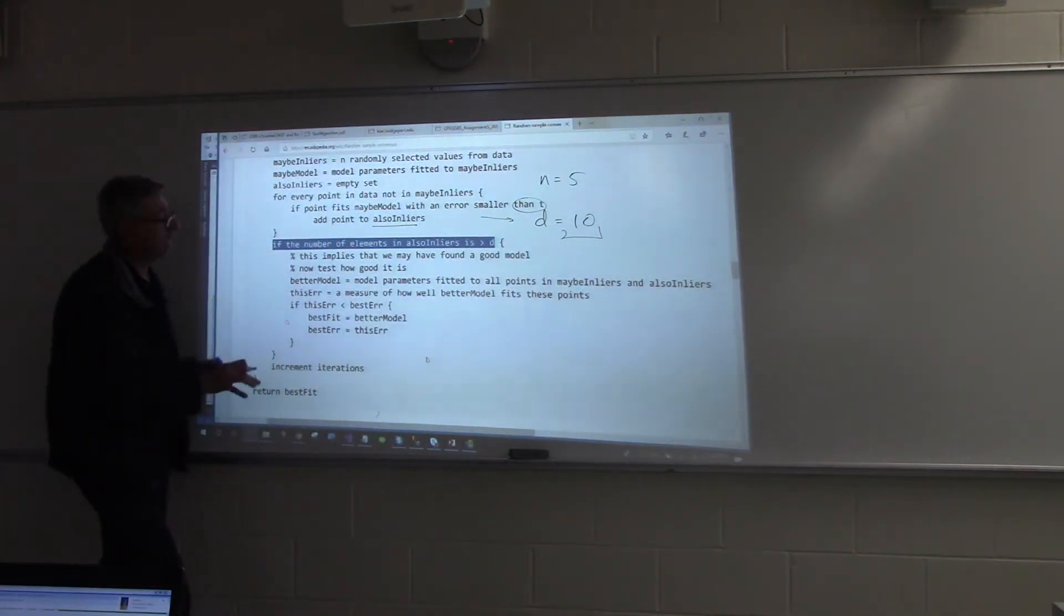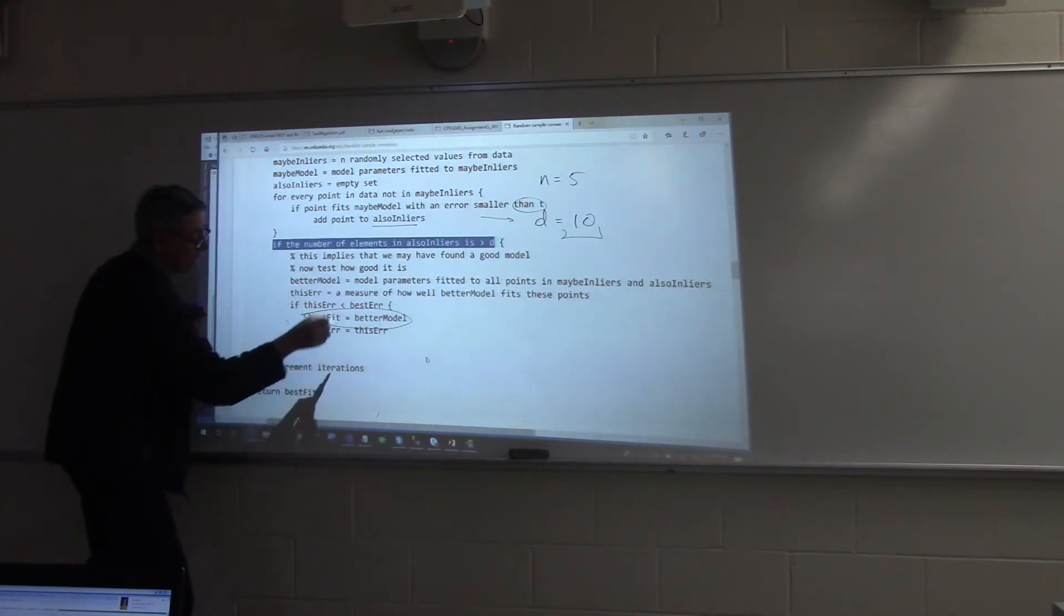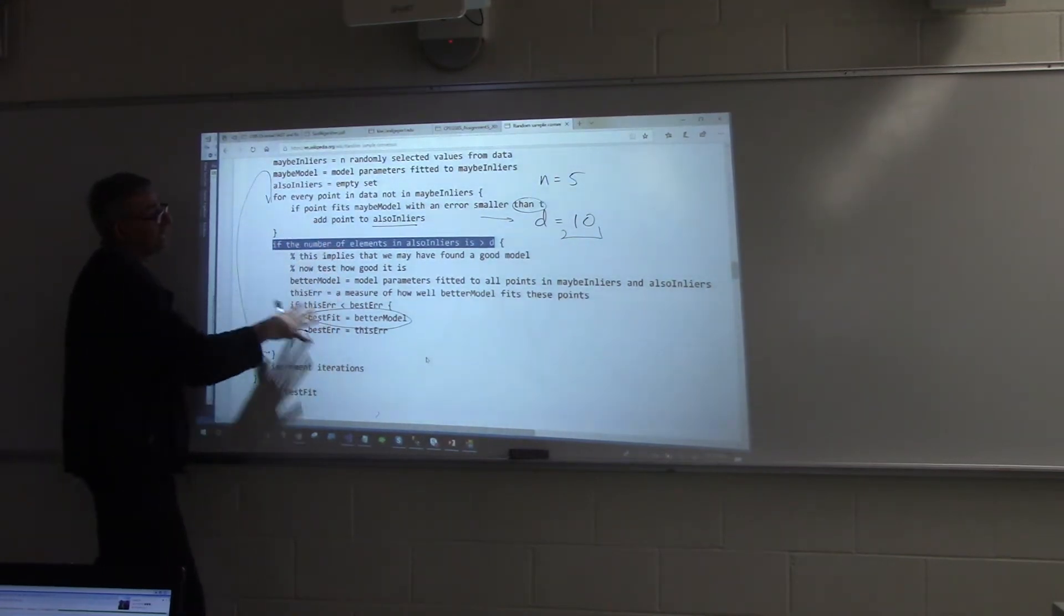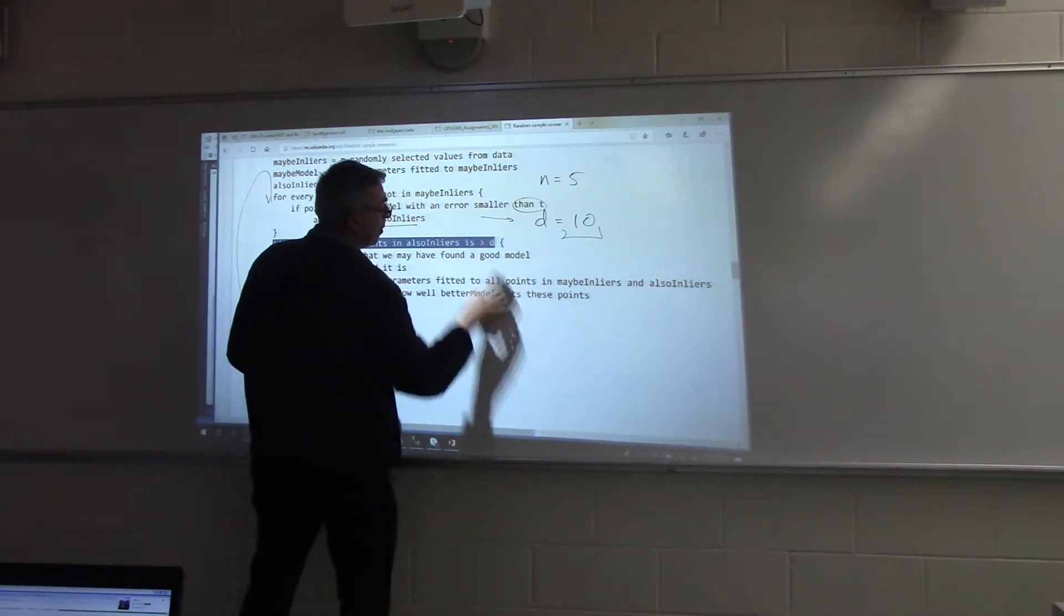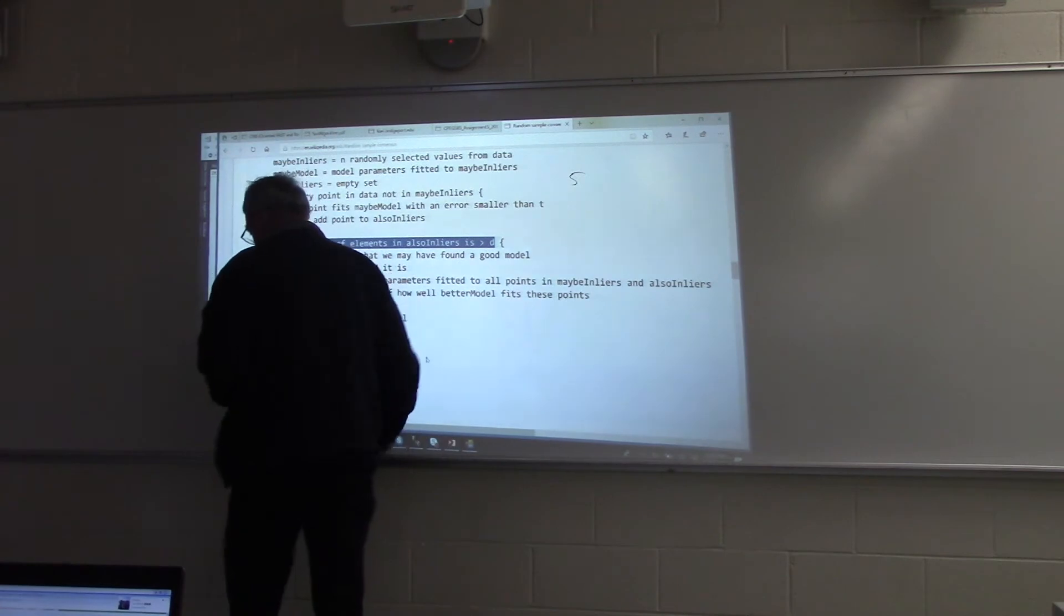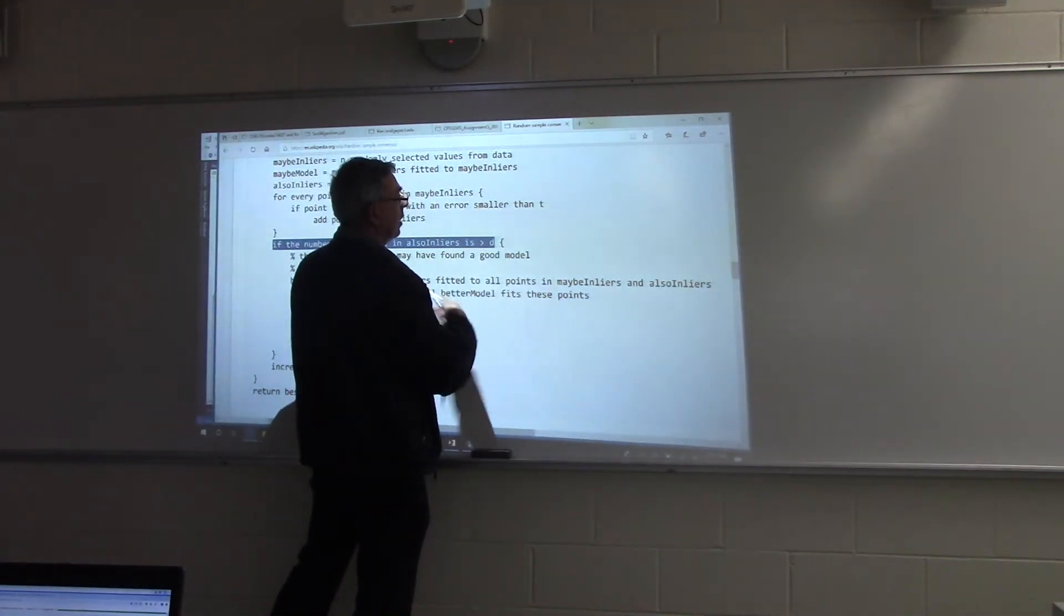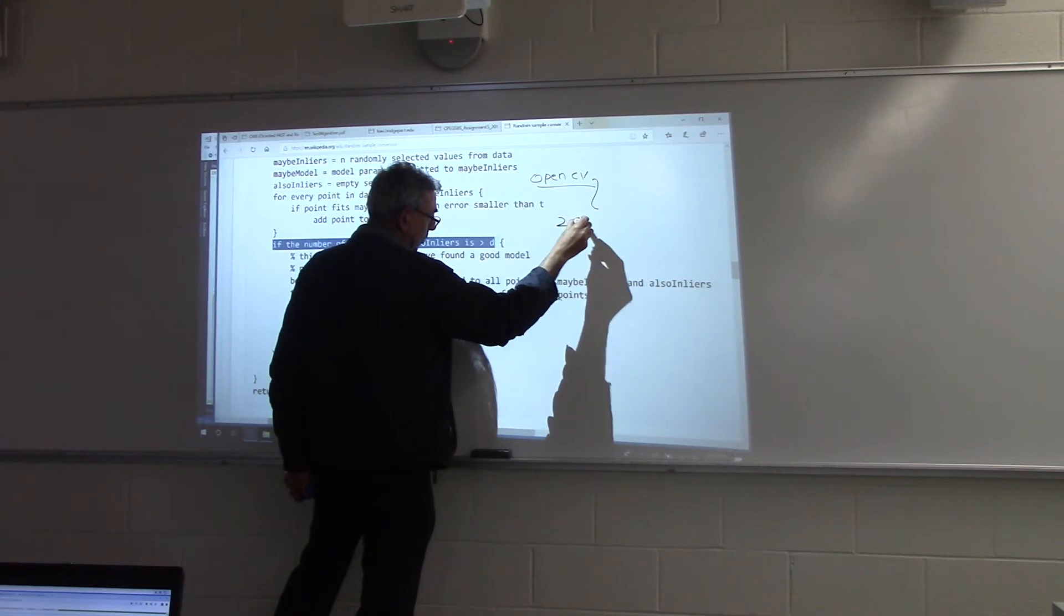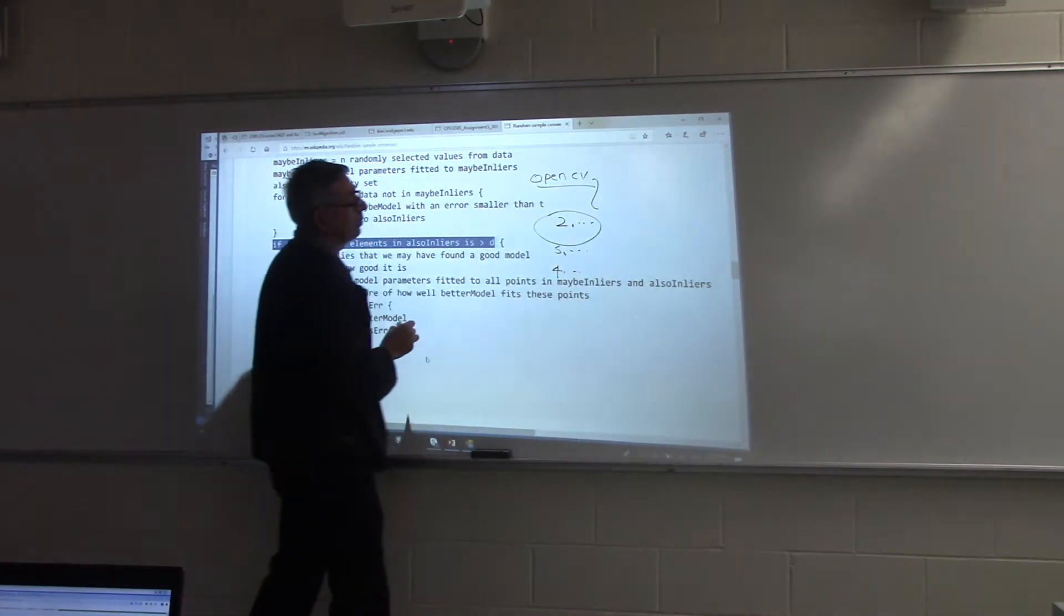So then we stored that model and we also, whatever the error was, we record that error. And then basically, we'll repeat this whole process K times. We may decide to repeat it 30 times or 50 times. And whatever at the end is our best model will be our final transformation matrix.